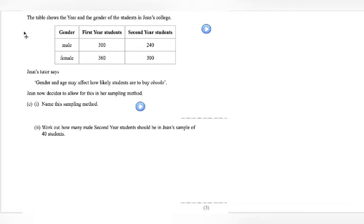The table shows the year and the gender of the students in Jeans College. Here we have the gender, male and female. Here we have the number of first year students and the number of second year students. Jean's tutor says, gender and age may affect how likely students are to buy e-books. Jean now decides to allow for this in her sampling method. Name the sampling method. We would answer this as a stratified sample.